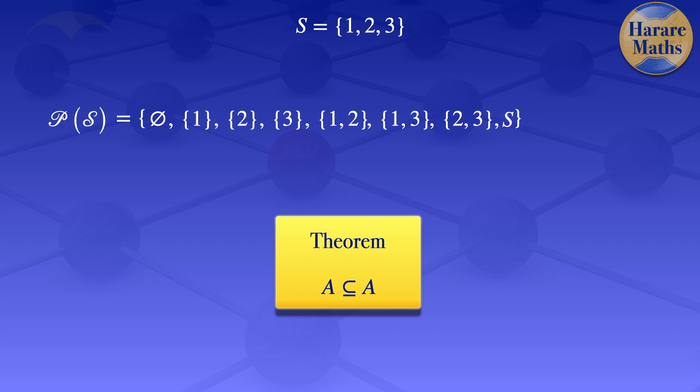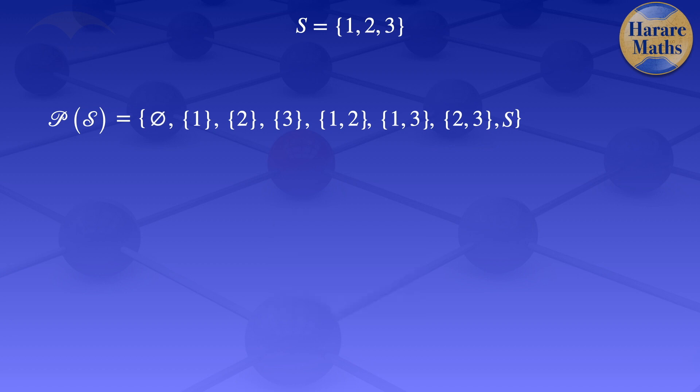So that is the power set of S — those are all the subsets of the given set S. We can now move on to the cardinality of the power set. We have the empty set, then the set {1}, the set {2}, and the set {3}.